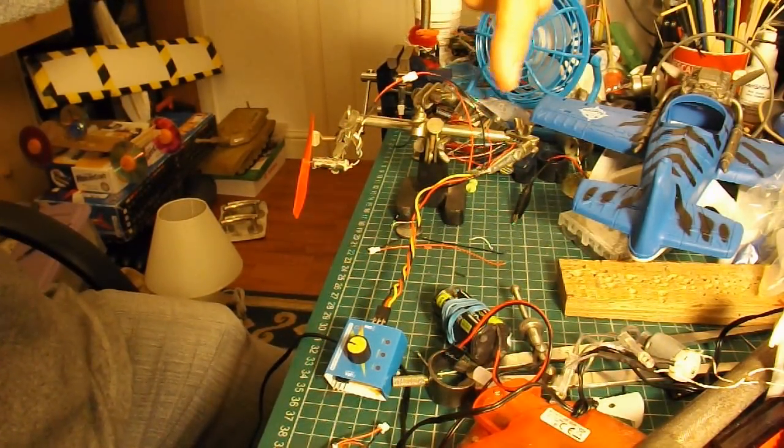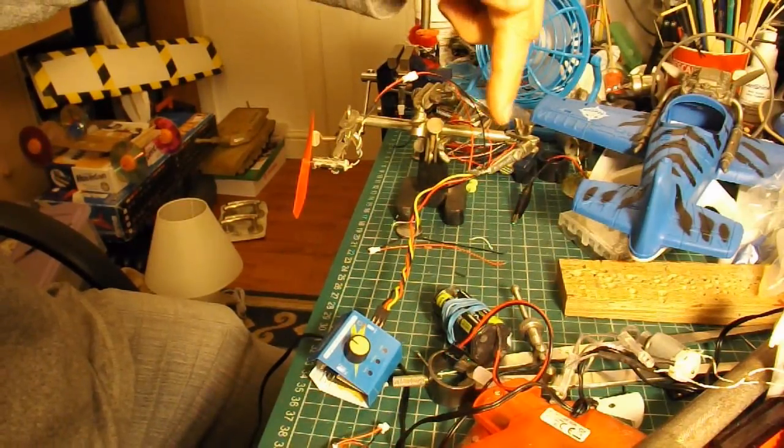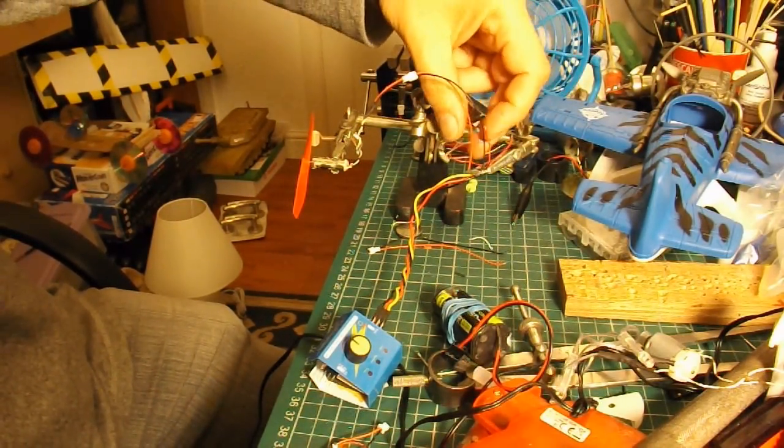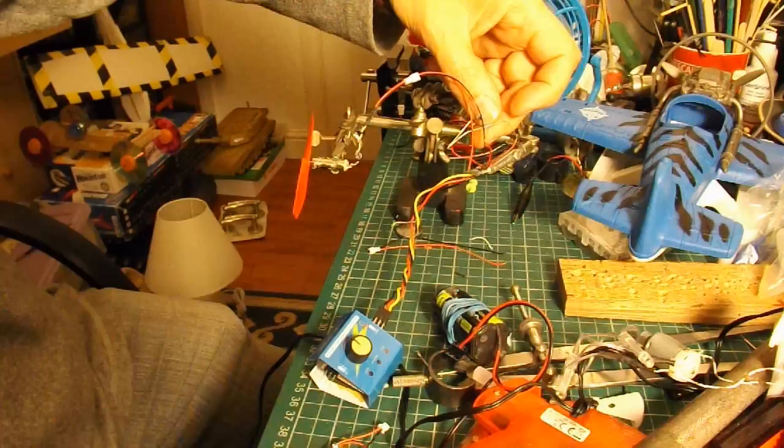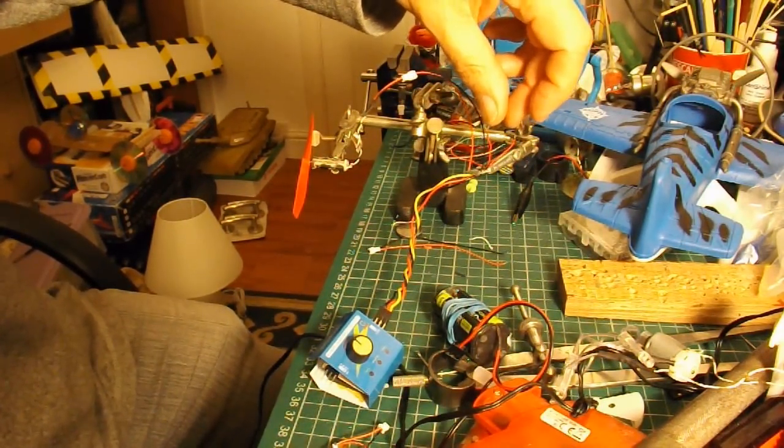Because we haven't got the little potentiometer that's in the servo to detect how far it's turned, I've put two 2.2k resistors onto the wires to replicate it.